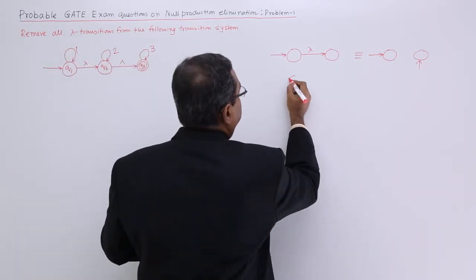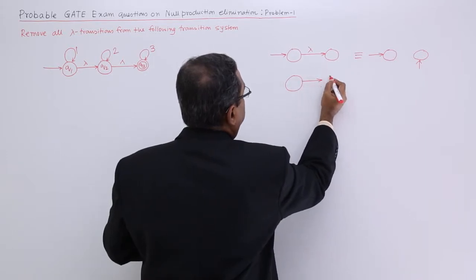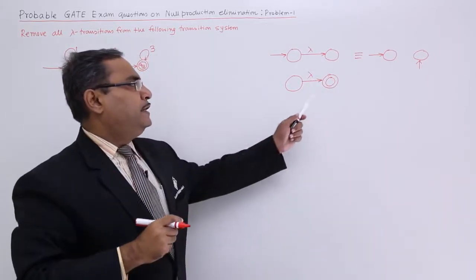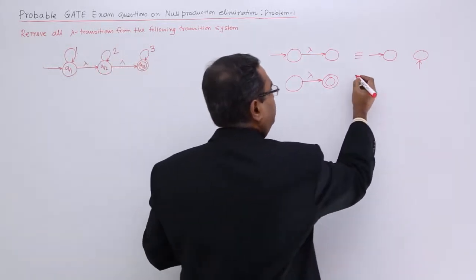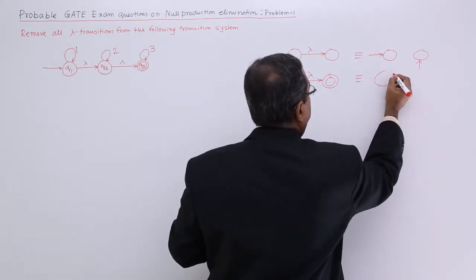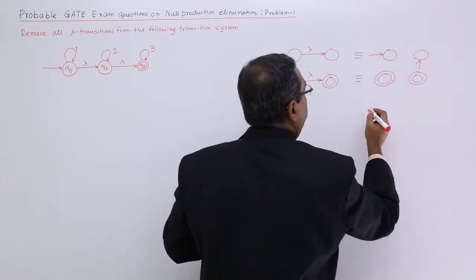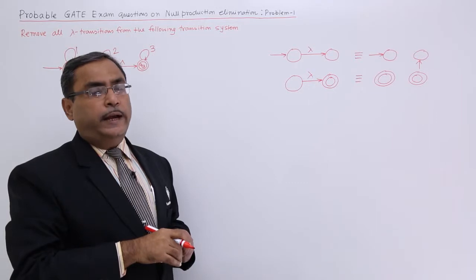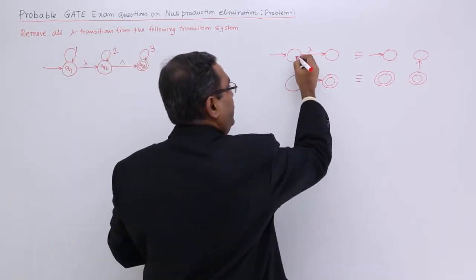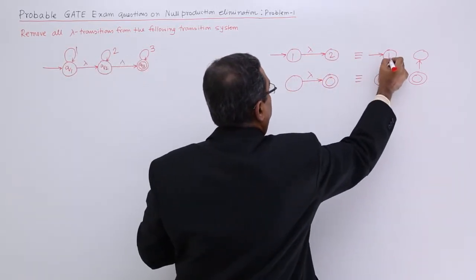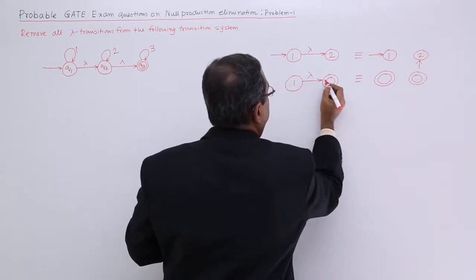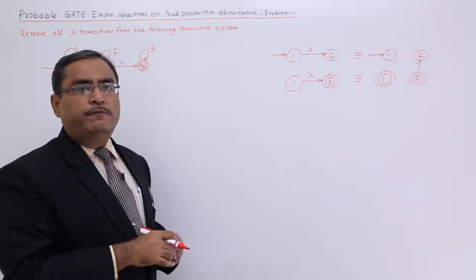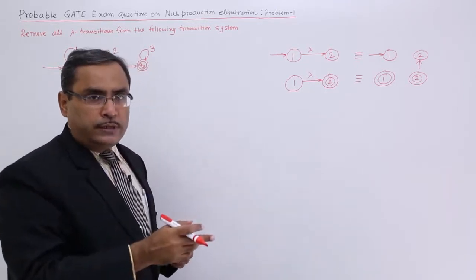Another rule was that, if there is a lambda transition and if this is the final state, then make the other one final state. So that was my another rule. State 1, state 2. I am just marking it, so that we can get which state is becoming final ultimately.